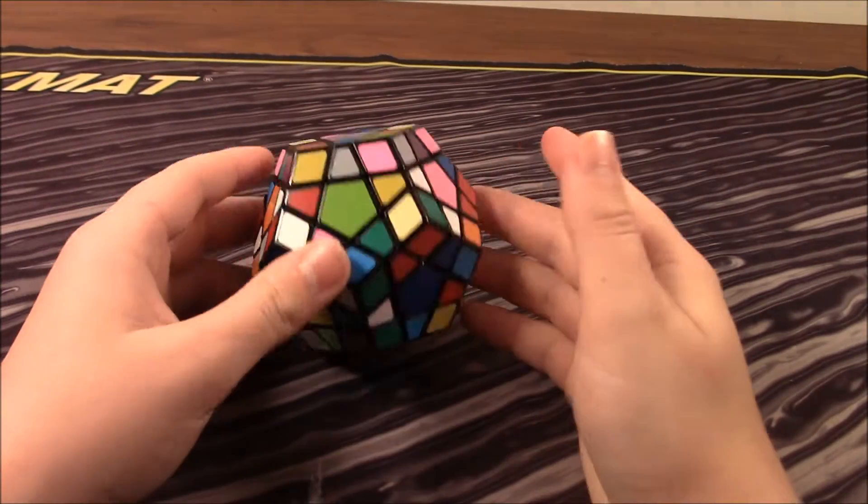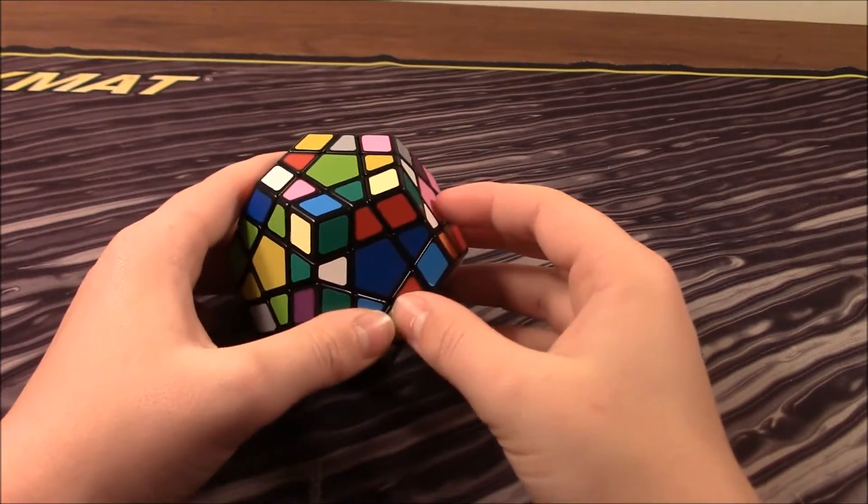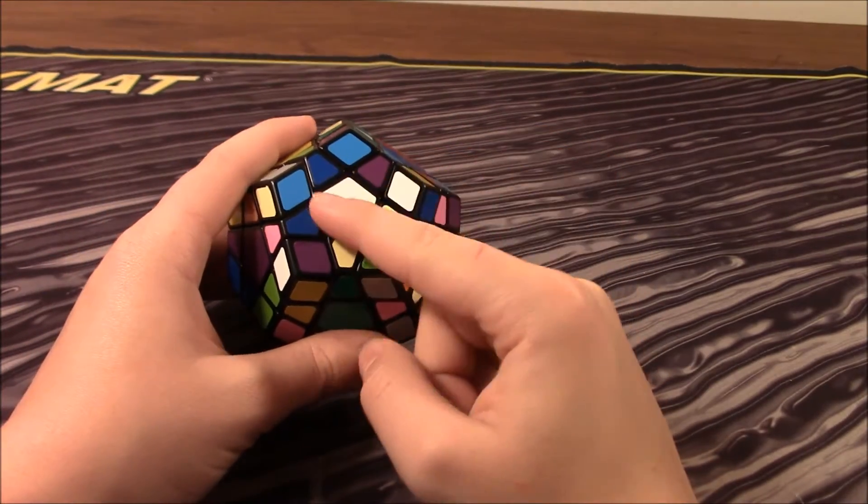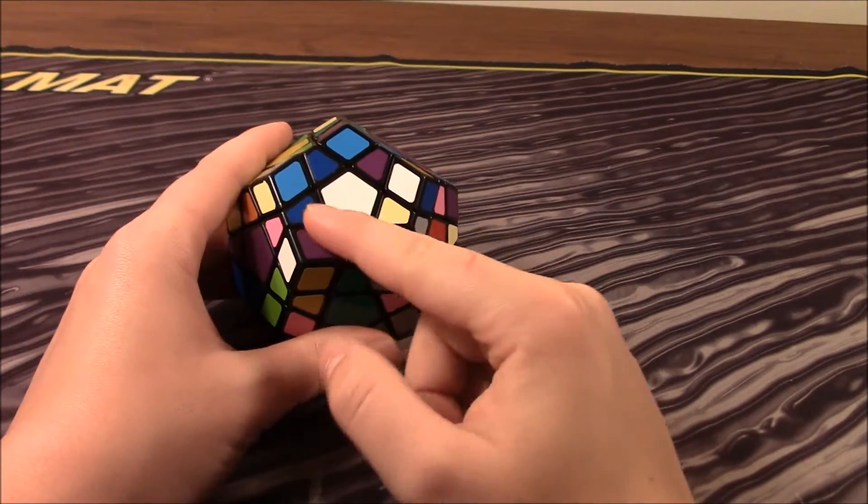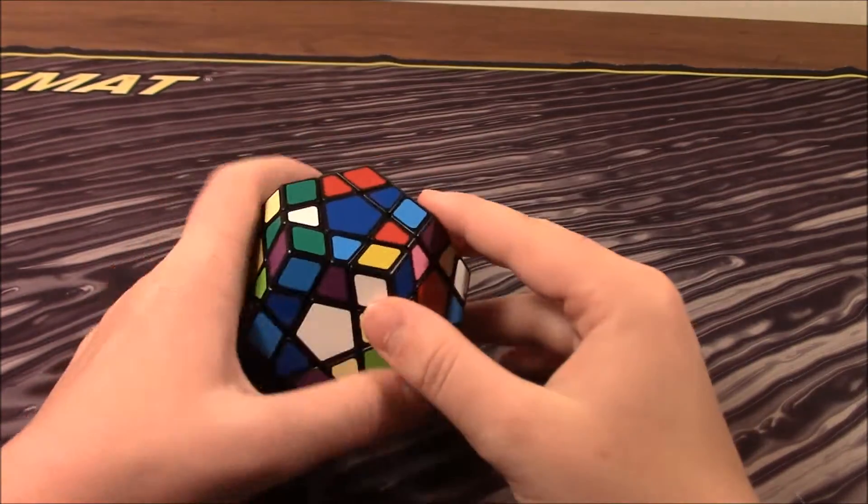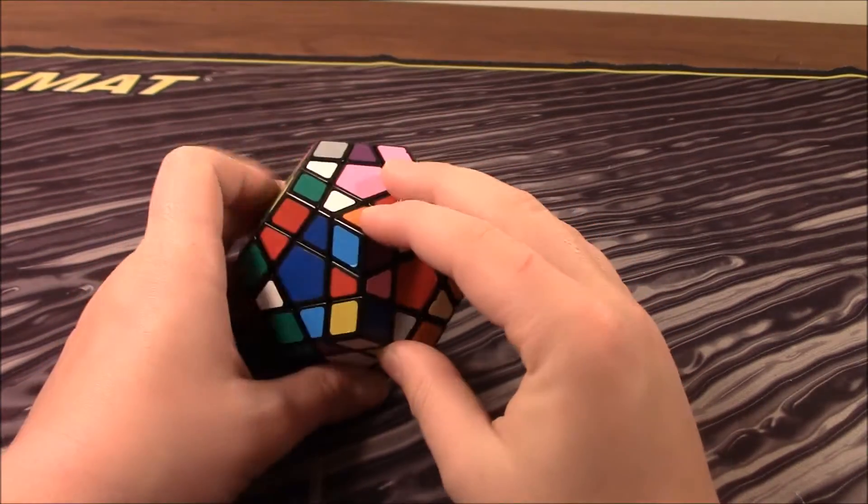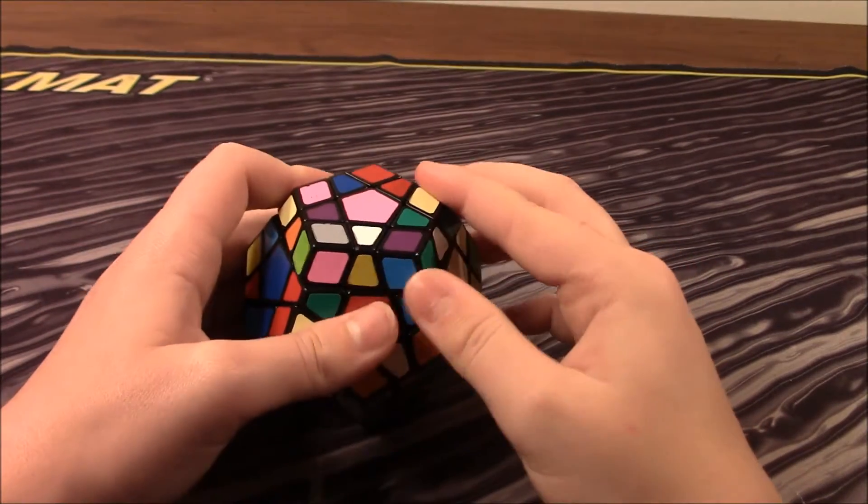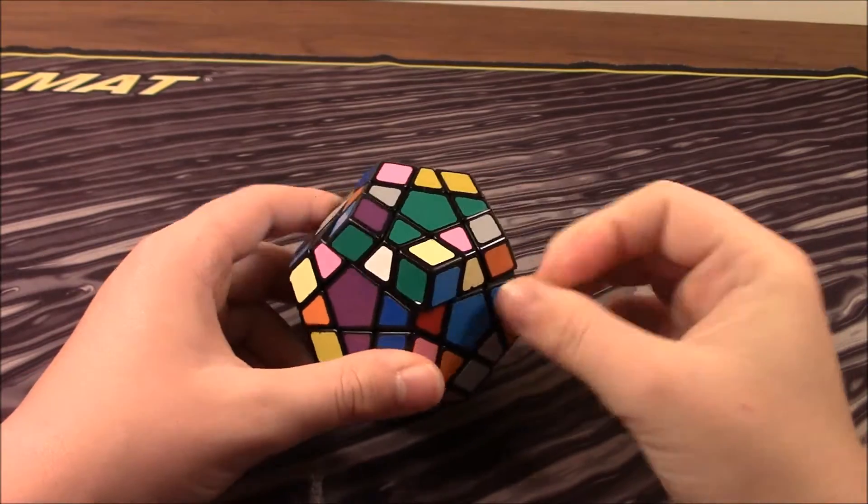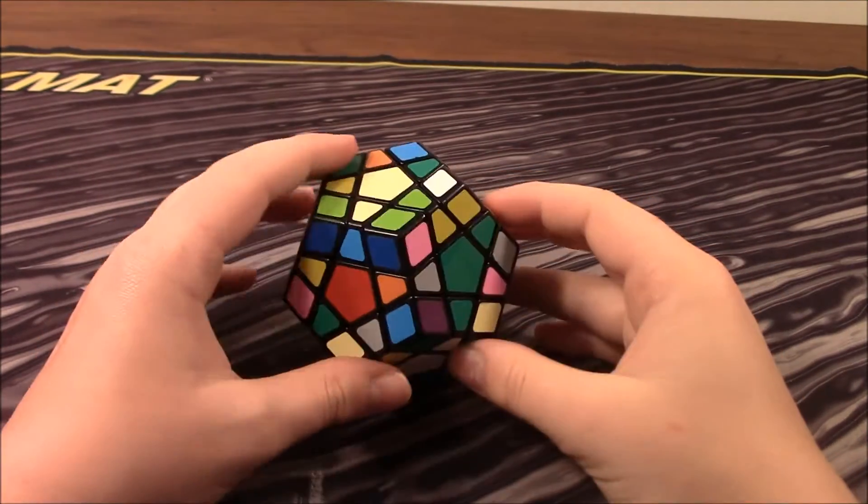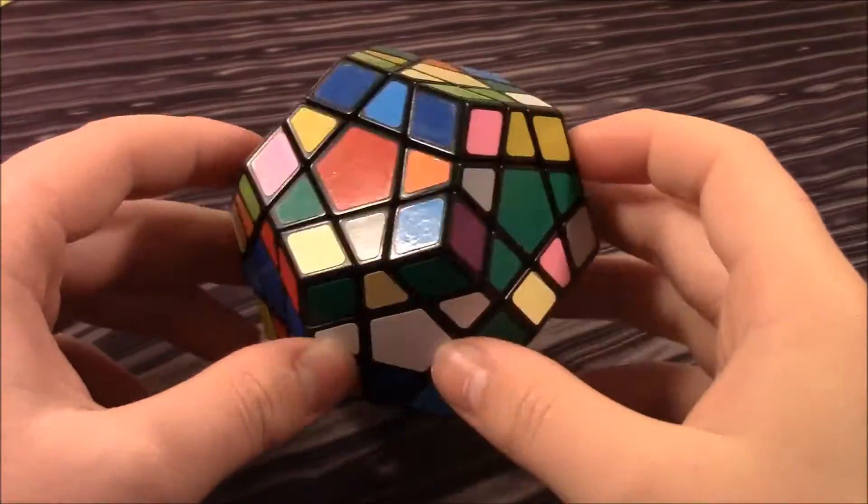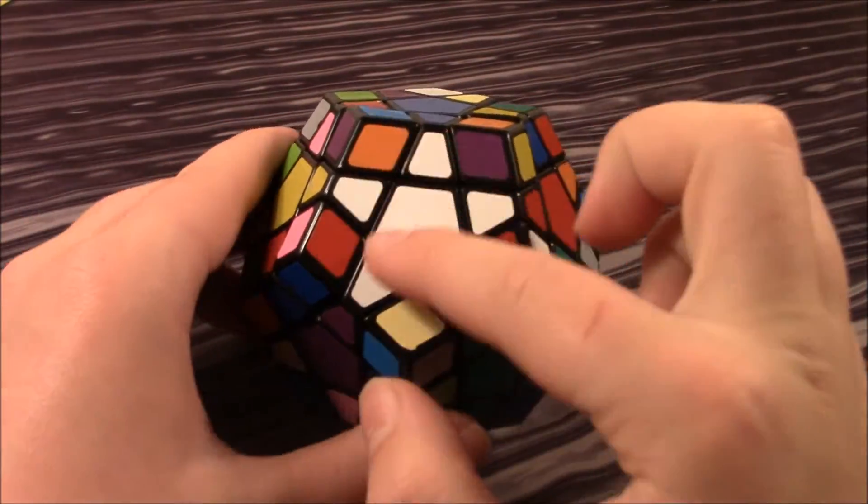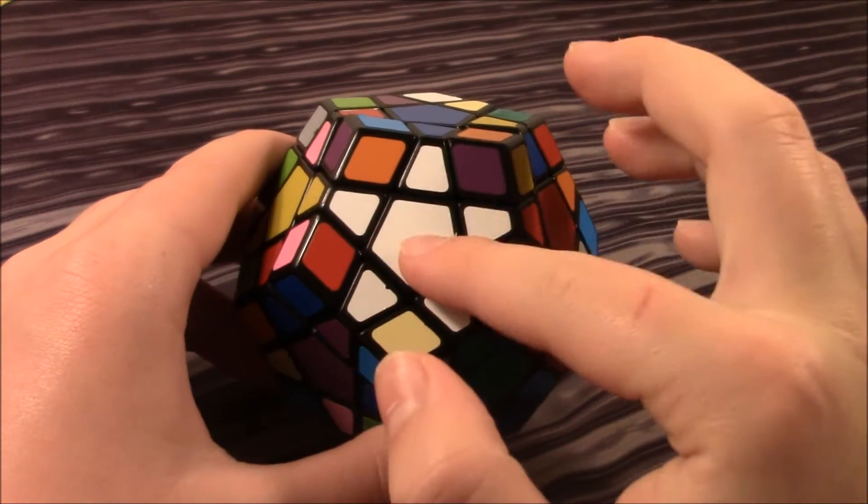Okay, so I gave this a nice good scramble, and we're ready to start. The first thing that you need to do is find the white star. It is a star on a Mega Minx instead of a cross, so let's go ahead and do that. Here's blue, green. So there we go, the star is solved.